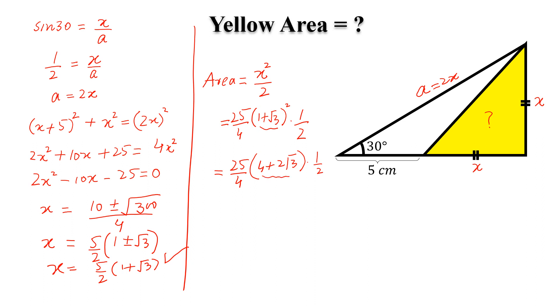We will take 2 common from this, and that will be cancelled with this 2, so we will simplify this, and this will be equal to (25/4)(2 + √3), and this is the required answer.